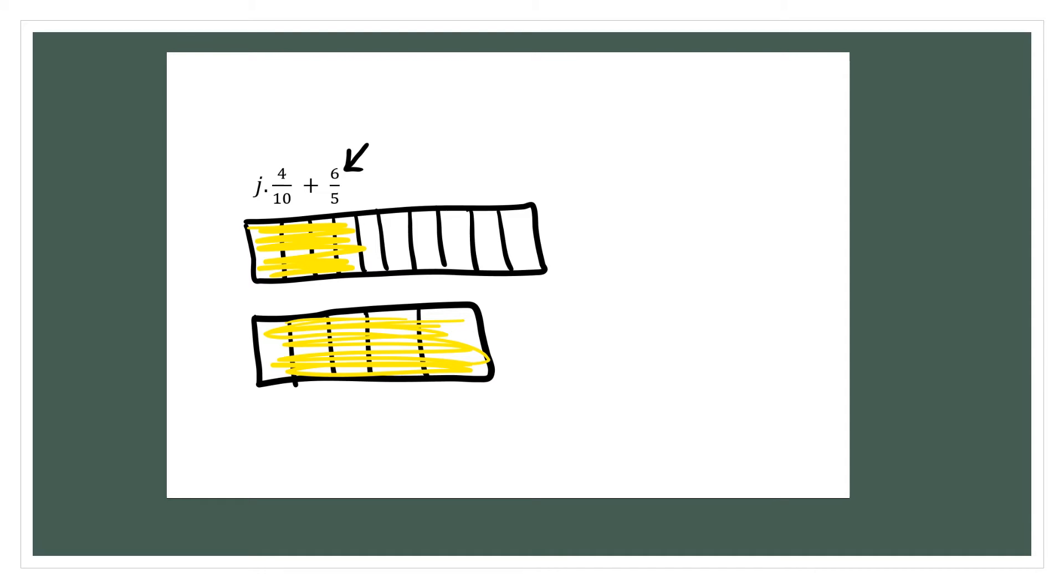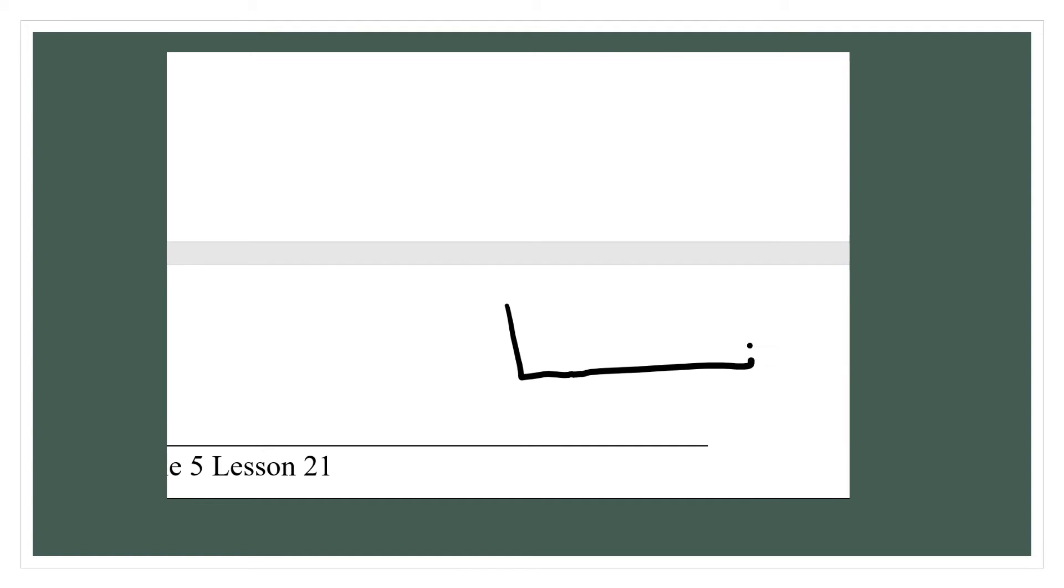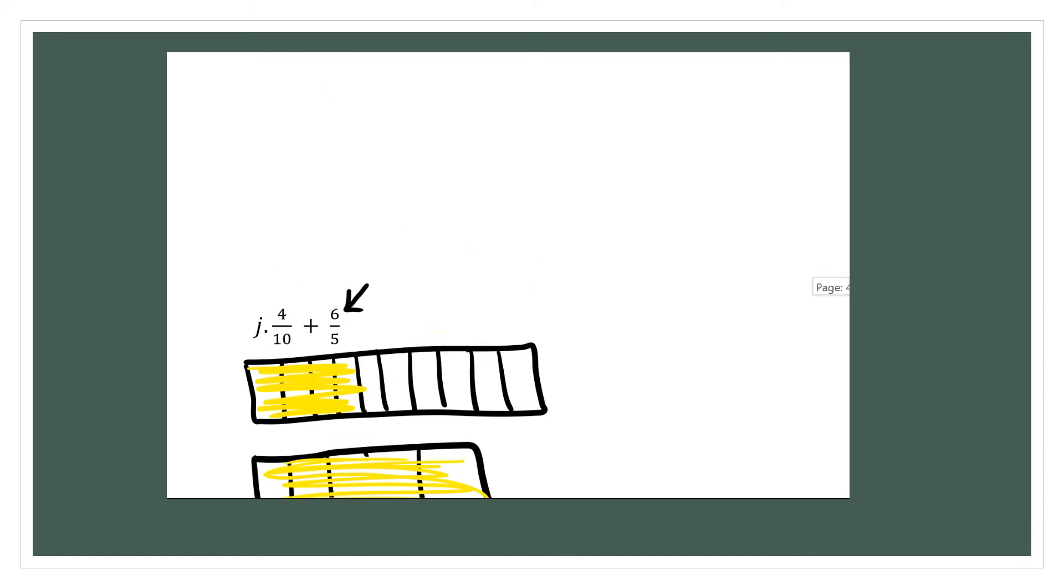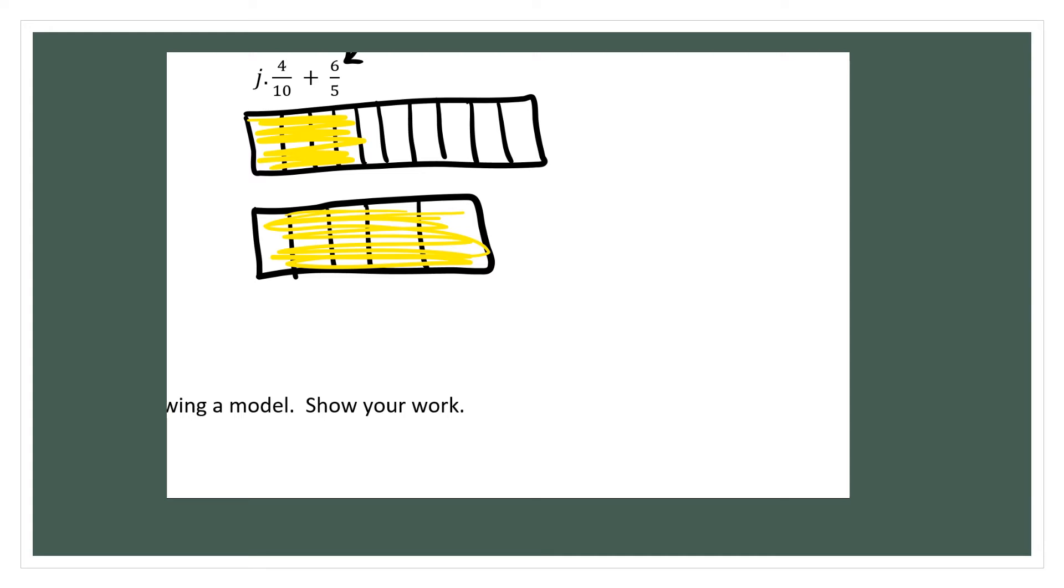And now to show the other fifth I'm going to make another box of fifths. So I'm going to make another box of fifths. And if 5 fifths make a whole and I have 6 fifths then I have one extra fifth. So I'm going to color in just one extra.